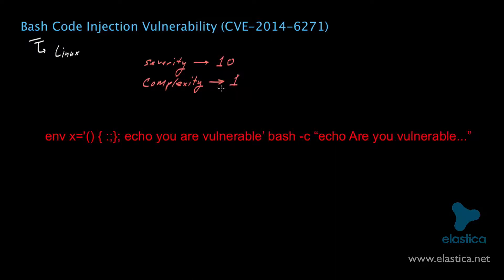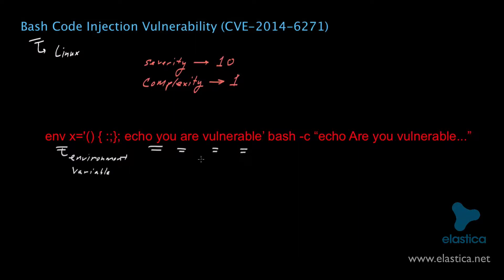What you can see here on the screen is a very simple one-line proof-of-concept exploit. Bash has this concept of an environment variable, which can be used to pass specific values into an invoked instance of Bash. It turns out that one can actually add some commands to the end of the description of an environment variable, and Bash, in an unpatched version, will actually run those commands. So if a bad guy plays his cards right, he can effectively get Bash to execute any commands of his choosing.